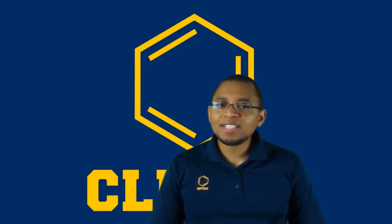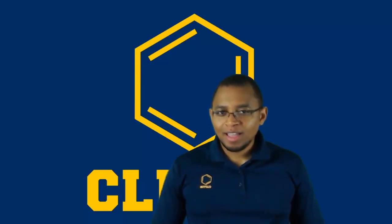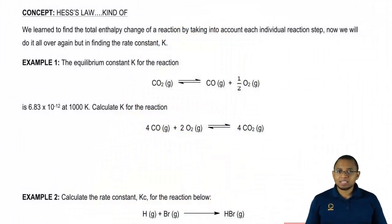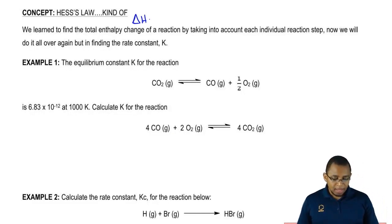Hey guys, in this new video, we're going to take a look at Hess's Law, at least kind of. Now we're going to say that when it comes to Hess's Law, we learned that the total enthalpy change, so total delta H of a reaction by taking into account each individual step, now we're going to do the same exact thing except instead of using delta H, we're going to use our equilibrium constant K. Pay very close attention to what I do here for these two particular examples.